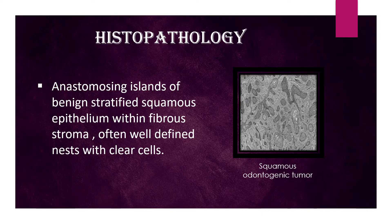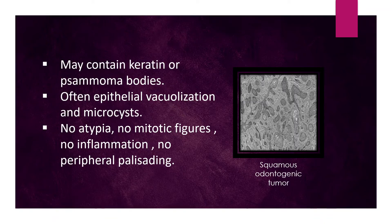Histopathology. Histopathological features include anastomosing islands of benign stratified squamous epithelium within fibrous stroma, often well-defined nests with clear cells, microcyst keratin or Rushton bodies, often epithelial vacuolization and necrosis. No atypia, no mitotic figures, no inflammation, no peripheral palisading.